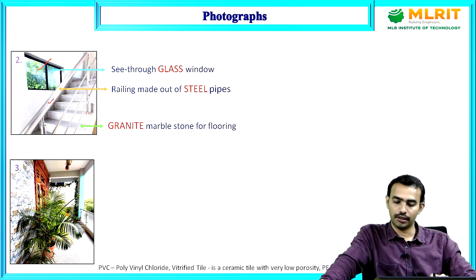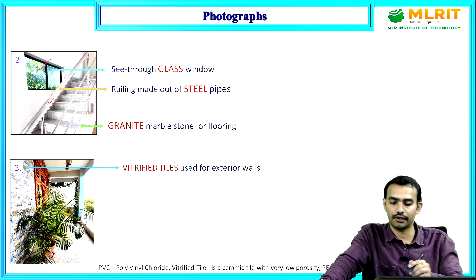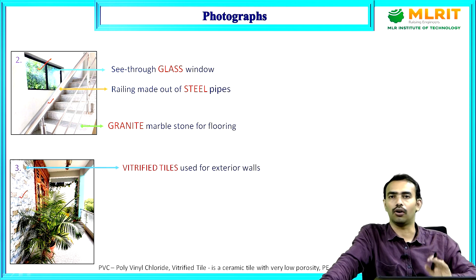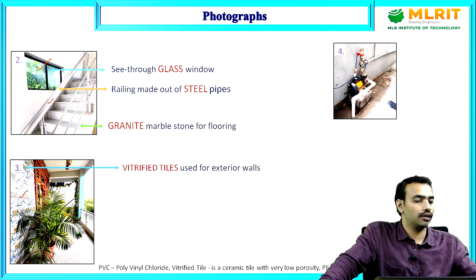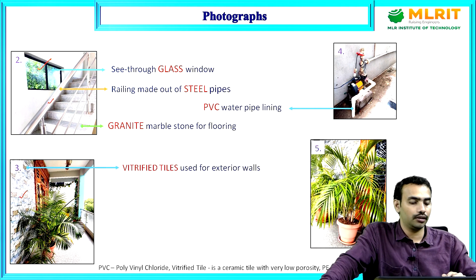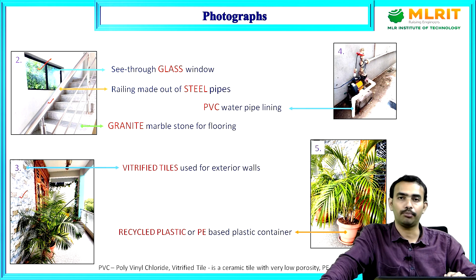In the third photograph, you can see the walls covered with vitrified tiles. These vitrified tiles prevent water seepage through the walls and also give an aesthetic appeal. The water piping lines are all made out of PVC — polyvinyl chloride — plastic water pipes. Finally, in the fifth photograph, we have adapted recycled plastic, basically polyethylene plastic containers, for adding greenery to the house — for plantation basically.